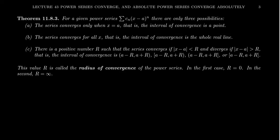We have seen previously that given a power series, there are three possibilities for its interval of convergence. The radius of convergence could be zero, meaning the series only converges at its center. The radius could be infinity, meaning the interval of convergence includes all real numbers. Or the radius could be a finite positive number, giving a finite interval on which the series converges.